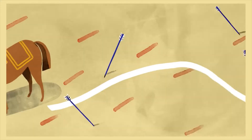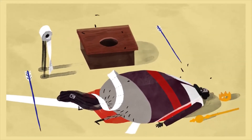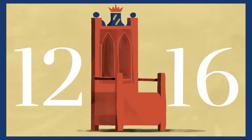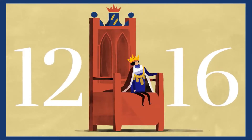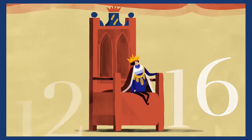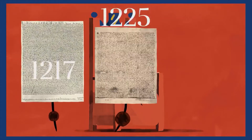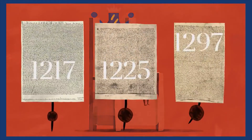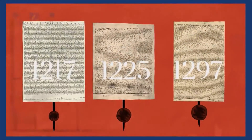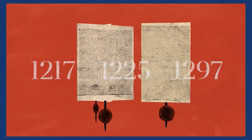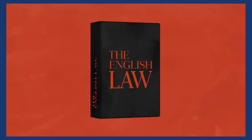When King John died of dysentery in 1216, nine-year-old Henry III took to the throne. To keep the peace, Magna Carta was reissued several times during the 13th century, until it was finally made part of English law.